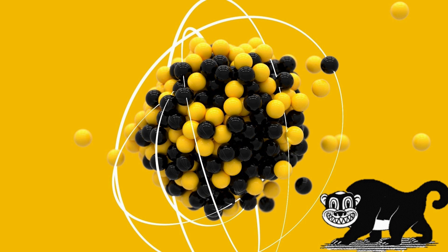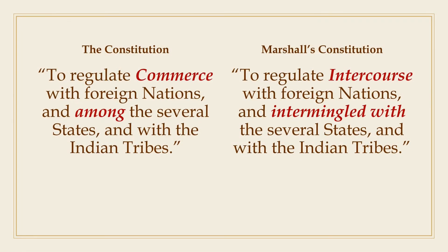Marshall also explained that the word 'among' in the Commerce Clause is defined as 'intermingled with,' and that it may very properly be restricted to that commerce which concerns more than one state. When the words of the Commerce Clause are replaced by Marshall's synonyms — commerce with 'intercourse' and among with 'intermingled with' — the power seems much broader, or at least that is how later courts would go on to rule.